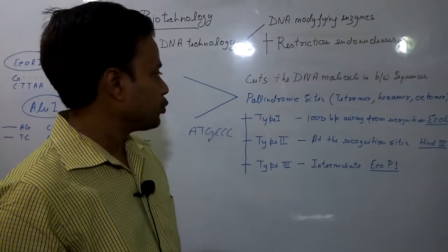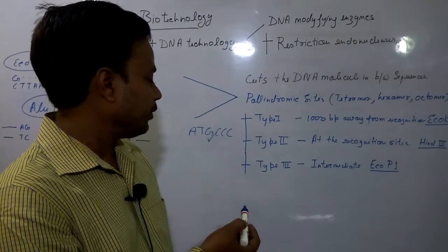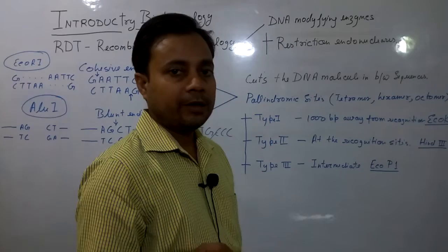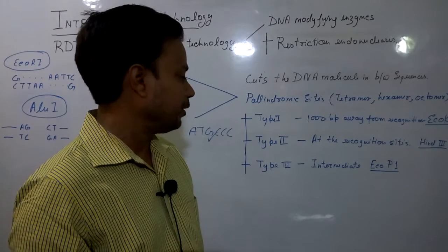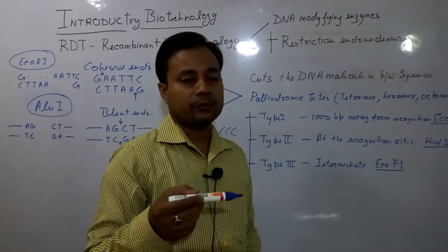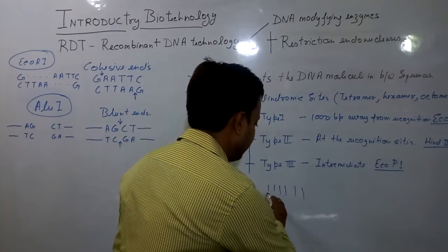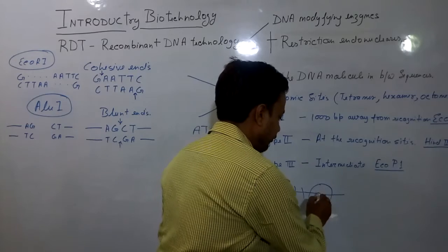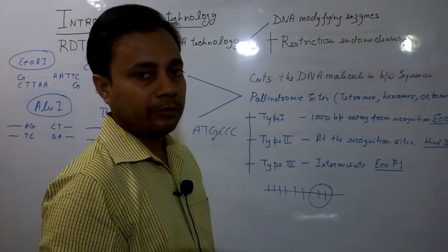The second and most popular type, frequently used in gene cloning practices, are the Type 2 restriction endonucleases — for example, HindIII. These Type 2 enzymes cut the DNA molecules exactly at their recognition sites. The third type of endonucleases are intermediate between Type 1 and Type 2 — they tend to cut DNA molecules in the close vicinity of their recognition sites, such as within or near a hexamer recognition site. This classification is based on the cutting ability of the enzymes relative to their recognition sites.